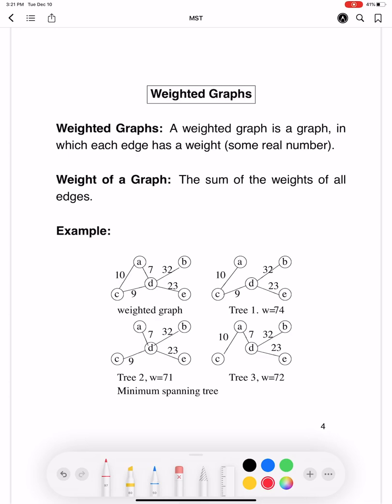Now let's consider spanning trees of a weighted graph. So if we consider the same graph as before, but now we add some weights to the edges. Now you will see that there are three spanning trees here that are shown.